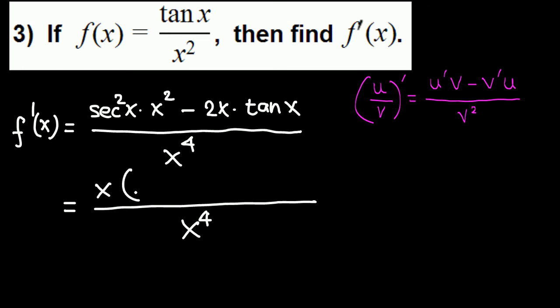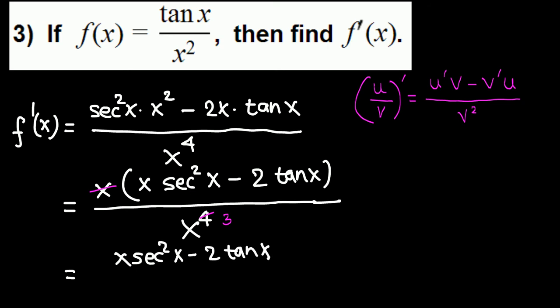So x to the fourth on the bottom. We can pull x out, and then secant squared x times x, so I want to write this x in front: x times secant squared x minus 2 tangent x. Then we can cancel one x, and three of them are left on the bottom. That's the final answer: x secant squared x minus 2 tangent x, everything divided by x cubed.